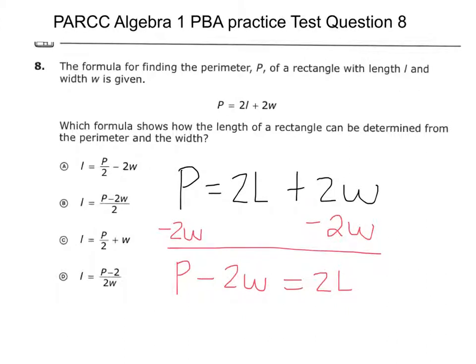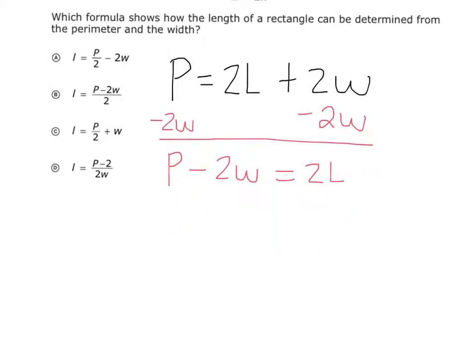Now I'm trying to solve for L, so what do I do now? Divide everything by 2 like this. And so I have L equals what? Not P minus 2. P divided by 2. And then notice these 2's cancel, so it's minus W like that.